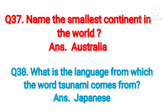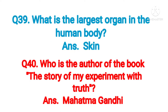Question number thirty-seven: name the smallest continent in the world. Answer: Australia. Question number thirty-eight: what is the language from which the word 'tsunami' comes? Answer: Japanese. Question number thirty-nine: what is the largest organ in the human body? Answer: Skin.